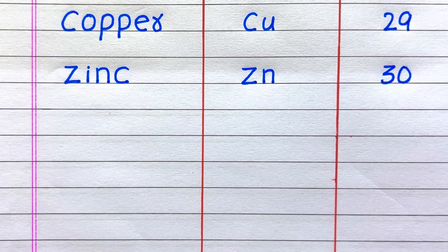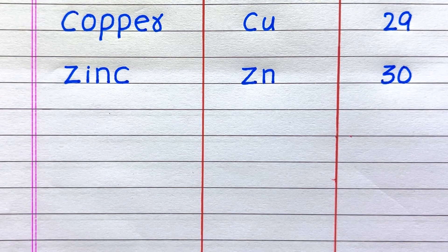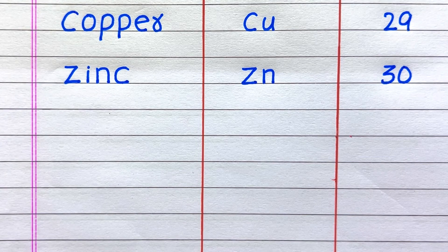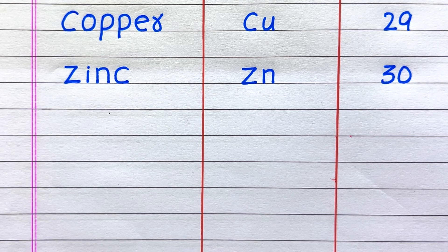The twenty-ninth element is Copper, symbol Cu, atomic number 29. The thirtieth element is Zinc, symbol Zn, atomic number 30.